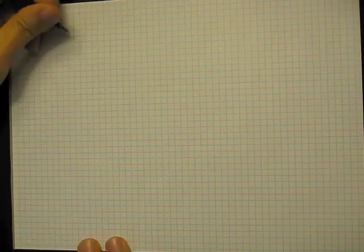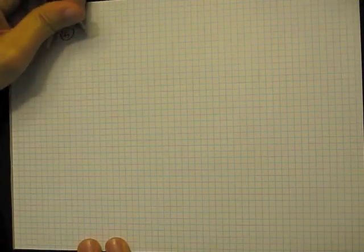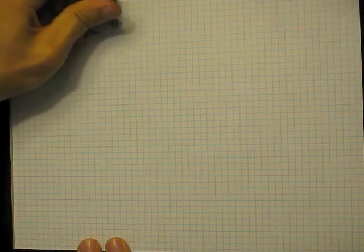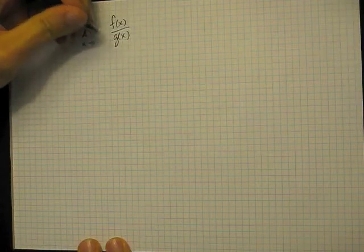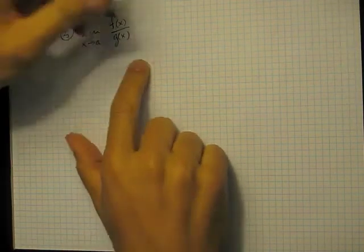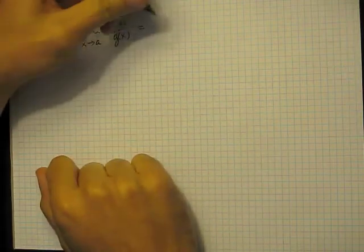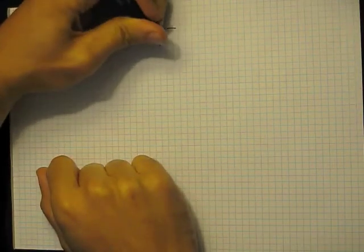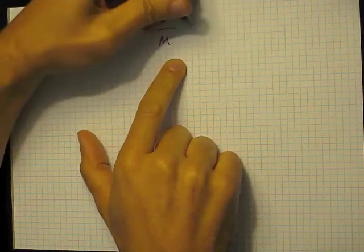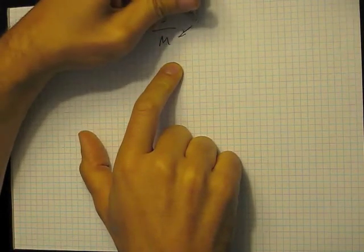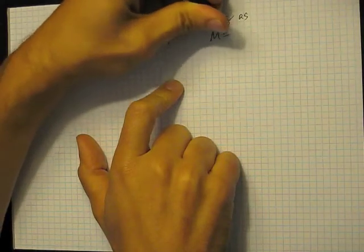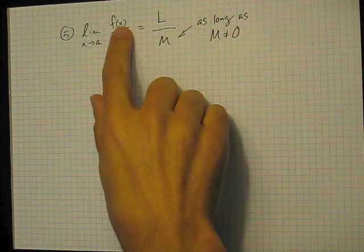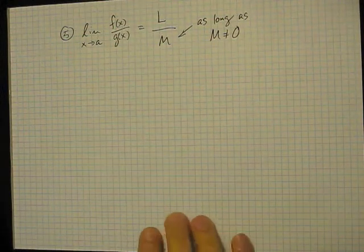More limit laws. How about five: the limit of a quotient. This is exactly what you would expect based on the previous rules — it's just L divided by M, as long as M is not equal to zero. This limit may not exist if M is equal to zero.